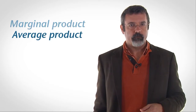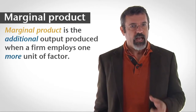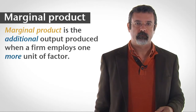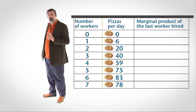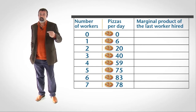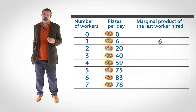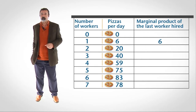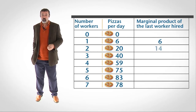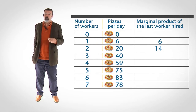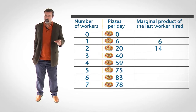Let's define two new measures: marginal product and average product. Marginal product is the extra output generated from employing one additional unit of short-run factor. For example, when the firm has no workers, it produces no pizza, and when it has one worker, it produces six pizzas — so the marginal product of the first worker is six pizzas per day. When the firm has one worker it produces six pizzas, and when it has two workers it produces 20 pizzas, so the marginal product of the second worker is 14 pizzas per day.